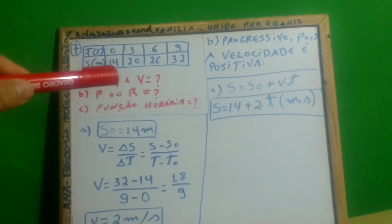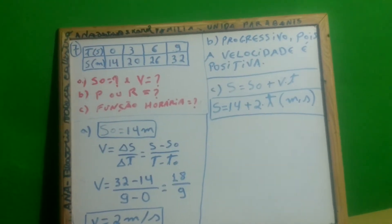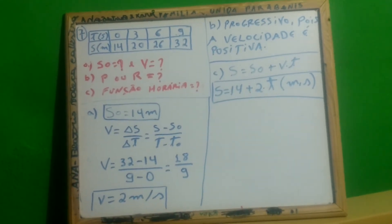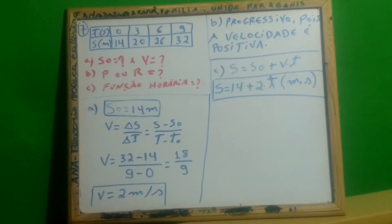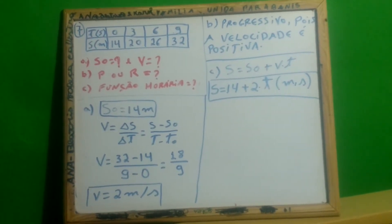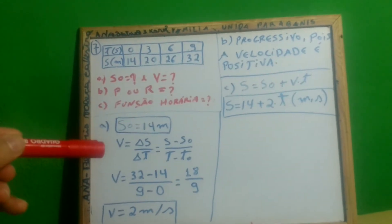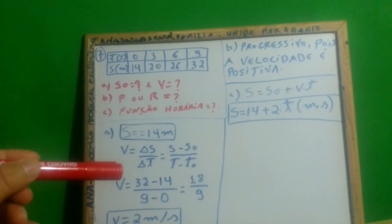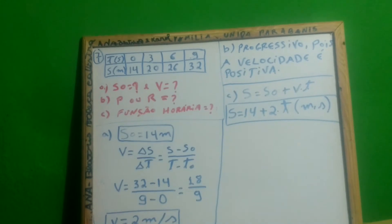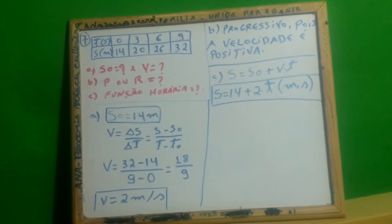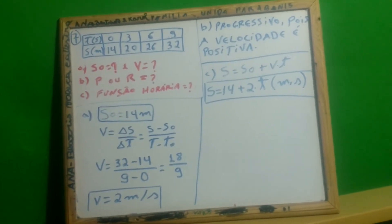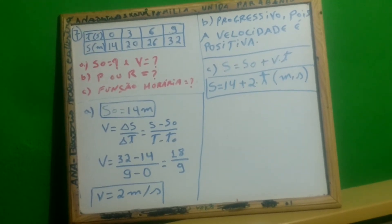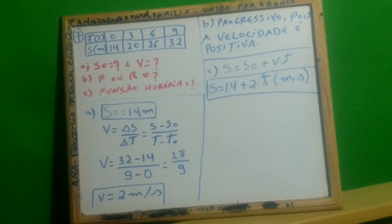A posição dele é 14 metros, então a posição inicial corresponde a 14 metros. Já para encontrar a velocidade, você vai usar a definição de velocidade, que é Δs sobre Δt, onde o Δs é a posição final menos a posição inicial, e o Δt é o tempo final menos o tempo inicial.